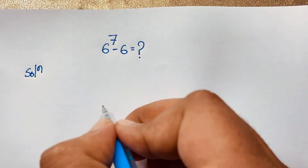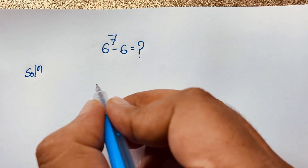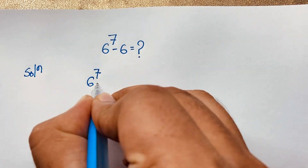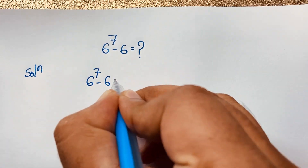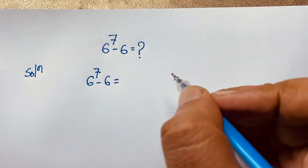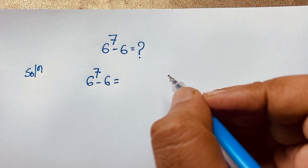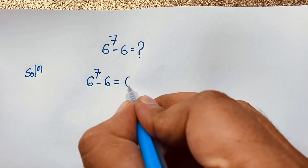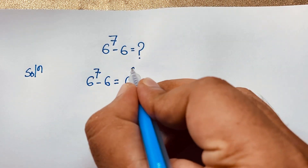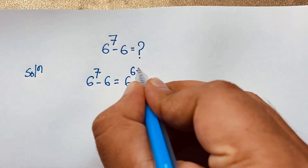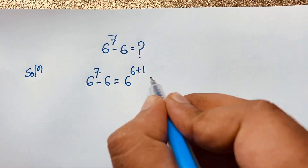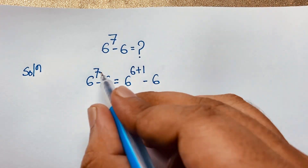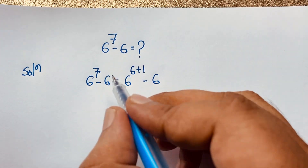Our question is 6 to the power 7 minus 6. At this moment, we rewrite the exponent 7 as 6 plus 1, so it becomes 6 to the power (6 plus 1) minus 6. We know that 6 plus 1 equals 7.